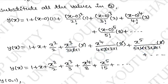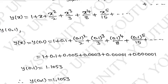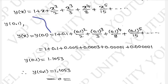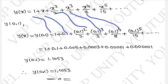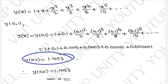This gives us y(x). To find y(0.1), substitute x = 0.1: y(0.1) = 1 + 0.1 + (0.1)²/2 + (0.1)³/3 + (0.1)⁴/8 + (0.1)⁵/15. Simplifying: 1 + 0.1 + 0.005 + 0.0003 + 0.0001 + 0.0001 = 1.1053.